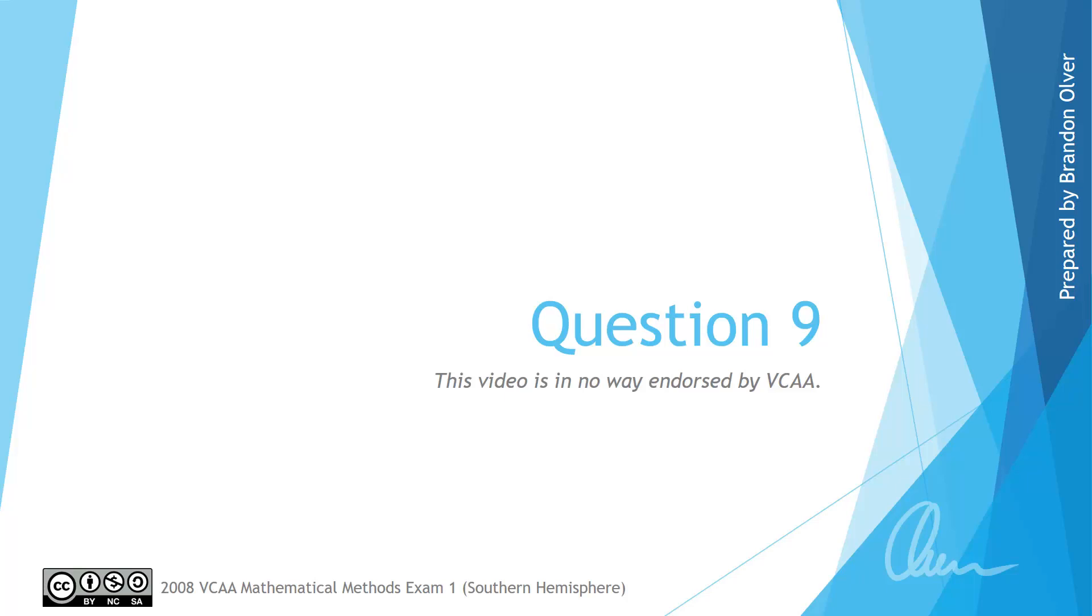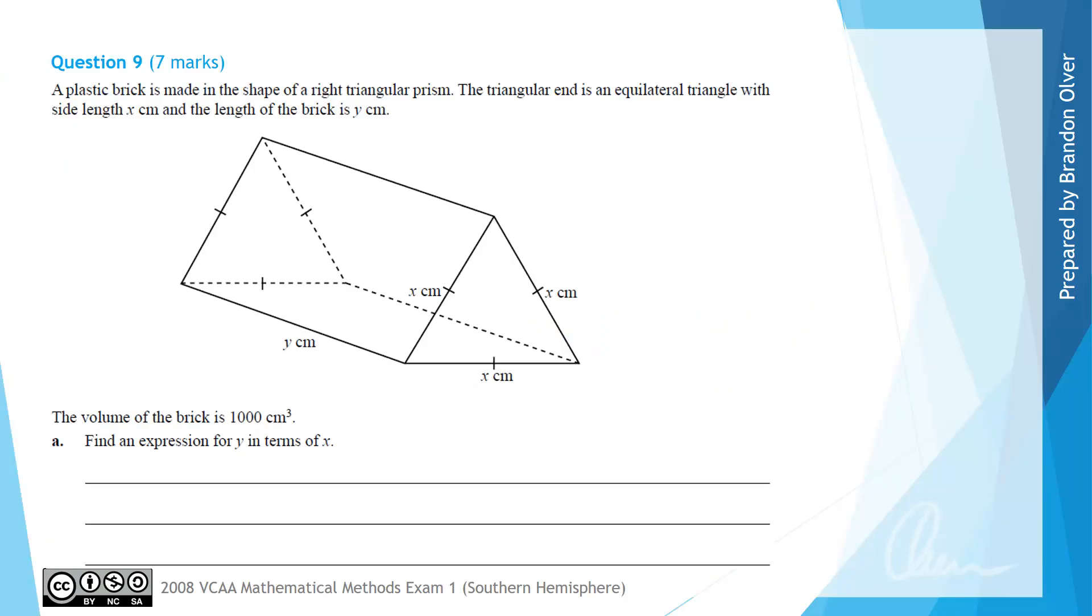Welcome to question 9 of the 2008 Mathematical Methods Exam 1. In this video we will be looking at the solution and examination advice for this question. A reminder that this video is in no way endorsed by VCAA. A plastic brick is made in the shape of a right triangular prism. The triangular end is an equilateral triangle with side lengths x centimeters and the length of the brick is y centimeters. The volume of the brick is 1000 cubic centimeters. For part A we are asked to find an expression for y in terms of x.